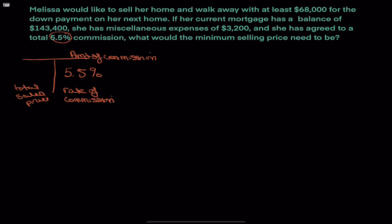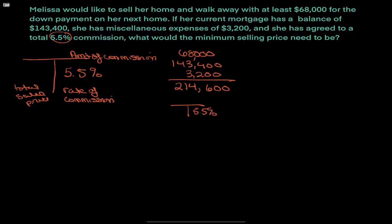Now that we've got the T-bar filled out, let's fill it in. This problem doesn't tell us an amount of commission, and it doesn't tell us a total sales price. A lot of students make this mistake — they add up the $68,000, the $143,400, and the $3,200 to get $214,600, then say 5.5% of $214,600 gives the commission. That's not right.